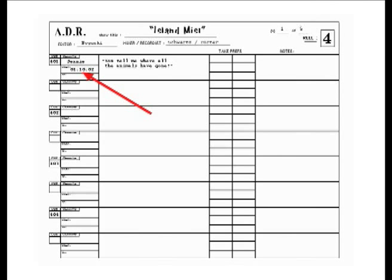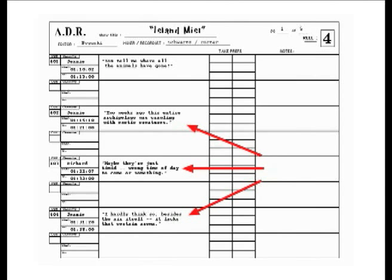You list the scene number from the script here. Note the lines with each character listed in performance order. Also note that these cues skip a box. This practice is often used so that the ADR supervisor has a blank box to work with should the director decide to add a line while they are actually in the ADR session. You learn how to be very flexible and give room for the moment of creativity or practicality.